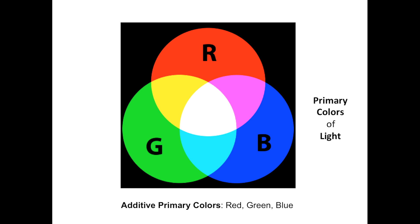These are the primaries of light — red, green, and blue. Photographers, videographers, set designers, and electronic media artists use these primaries. Painters and printmakers using pigments use a different set of primaries. Regarding the light primaries (RGB): when red and green are mixed in equal parts, they give yellow.